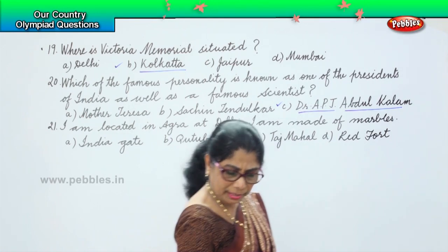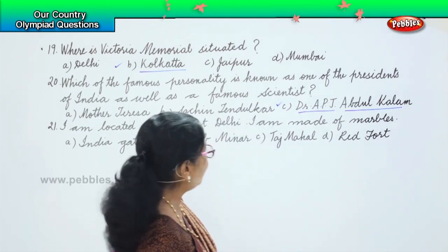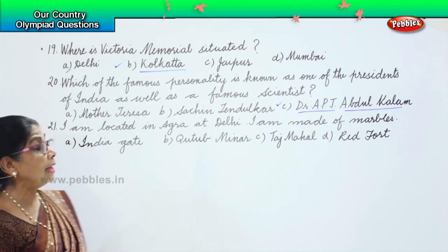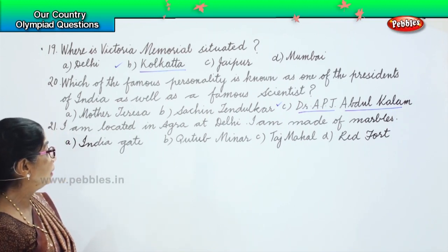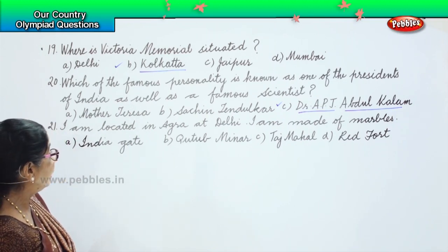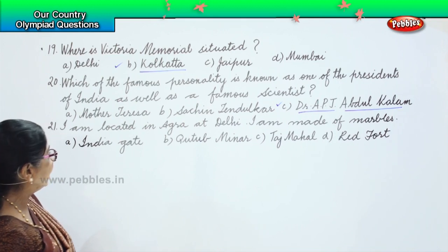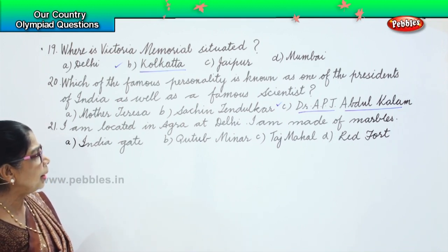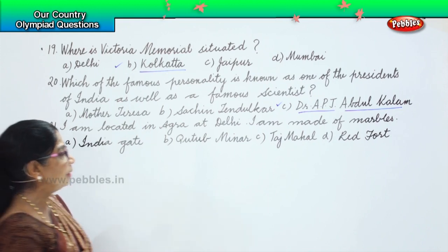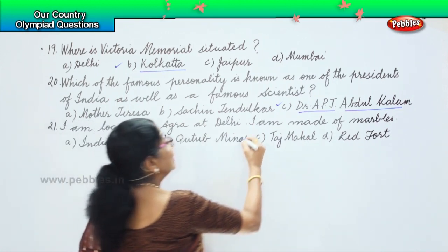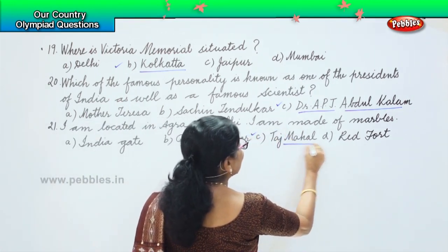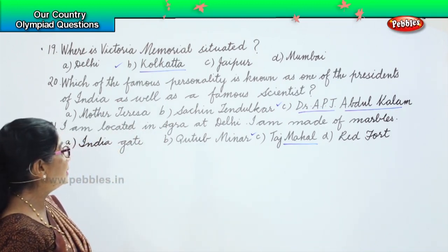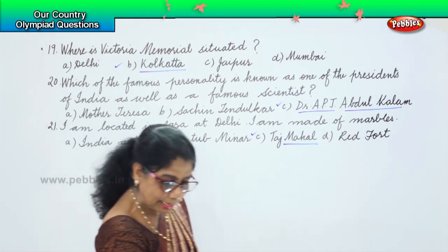So who am I? I am made of marble and I am situated at Agra. The options are India Gate, Qutub Minar, Taj Mahal, Red Fort — which is the right answer? Option C. Taj Mahal is made of marble and is in Agra.